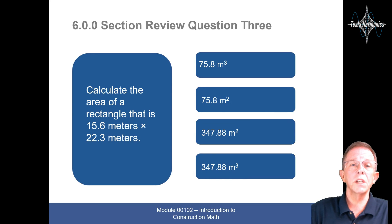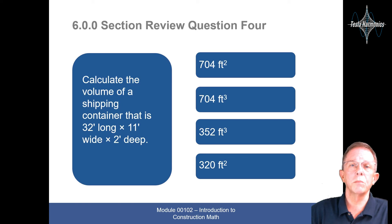Calculate the area of a rectangle that is 15.6 meters by 22.3 meters. Would that be 75.8 cubic meters, 75.8 square meters, 347.88 square meters, or 347.88 cubic meters. And that would be 347.88 square meters.